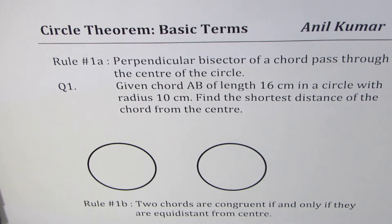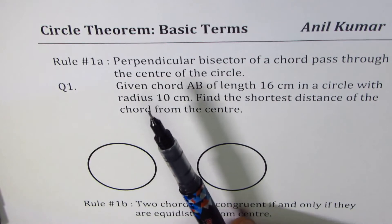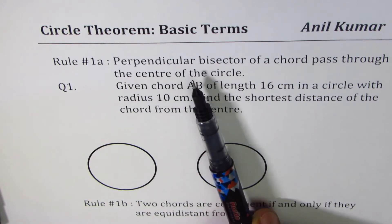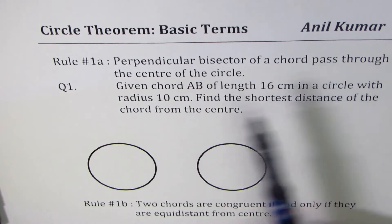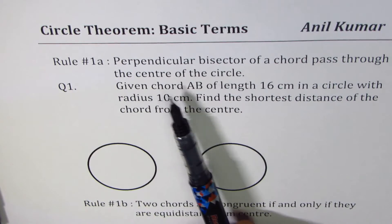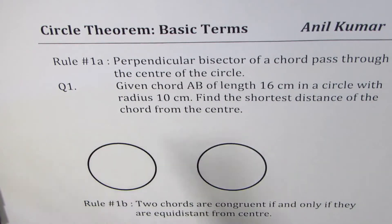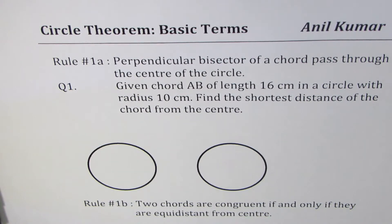Rule 1a is: the perpendicular bisector of a chord passes through the center of the circle. This is a very important rule which I have included in my set — it is not commonly seen but is well known.